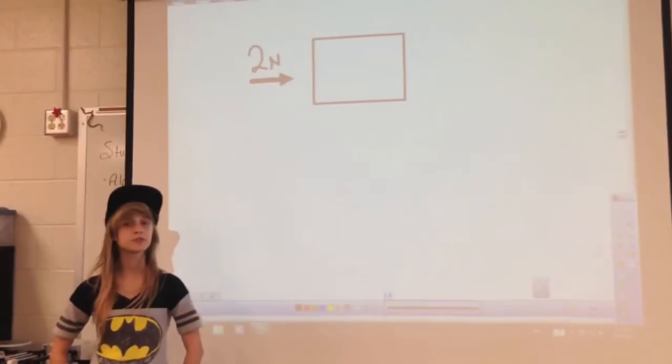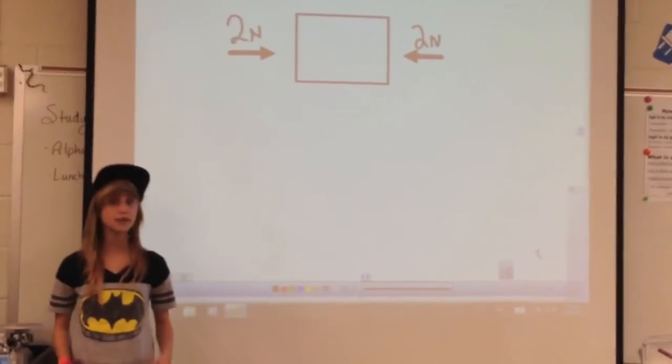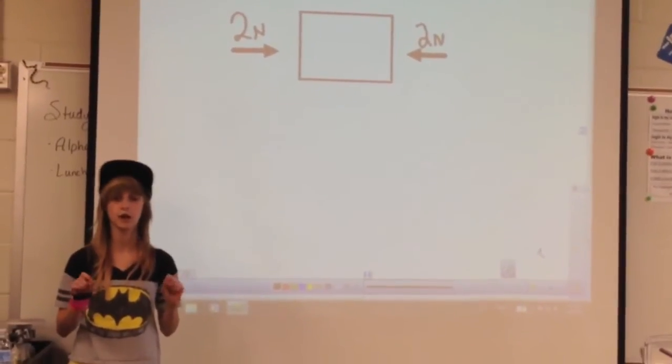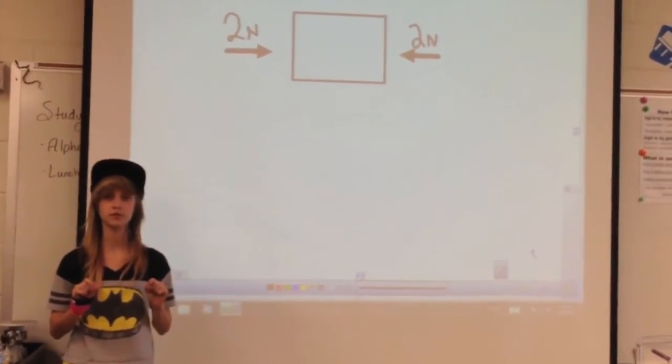This is an example of two newtons of force acting on an object to the right. This is an example of two balanced forces acting on an object in opposite directions. The result is no movement of the object.